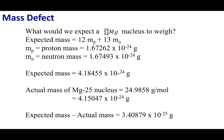Let's take a look at the magnesium-25 nucleus. Magnesium has 12 protons, and 25 minus 12 gives us 13 neutrons. We can take the mass of the proton times 12, add the mass of the neutron times 13, and if we add these two things together, we should get the expected mass of this total nucleus.